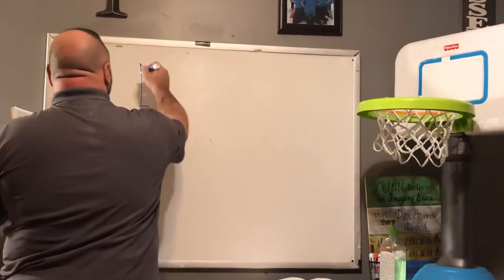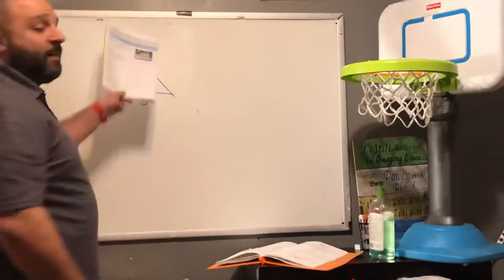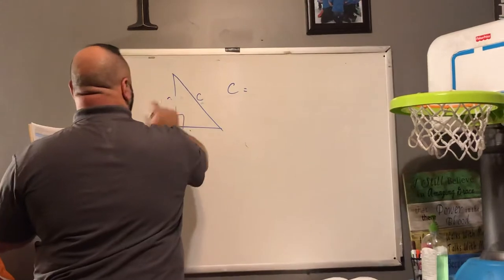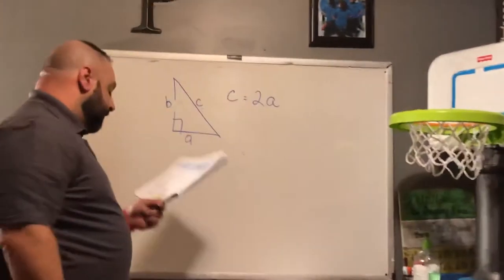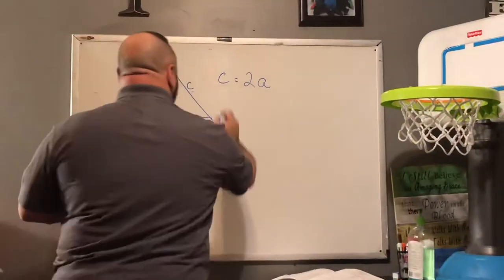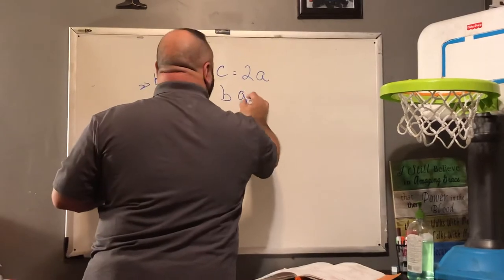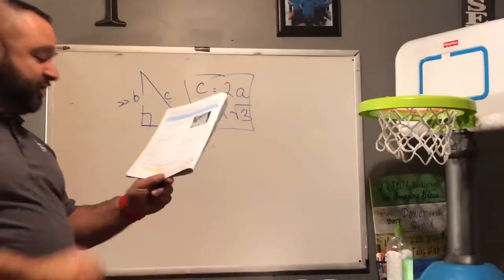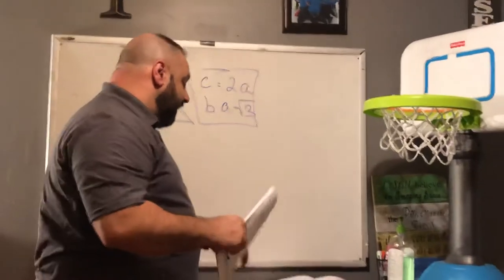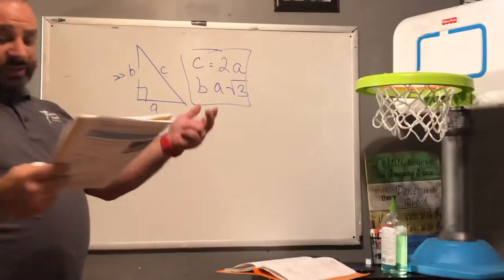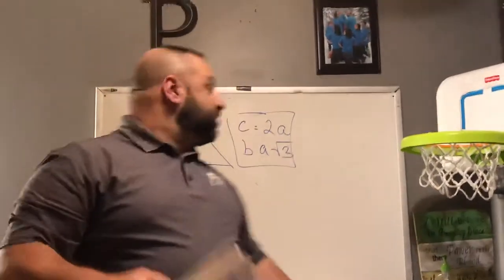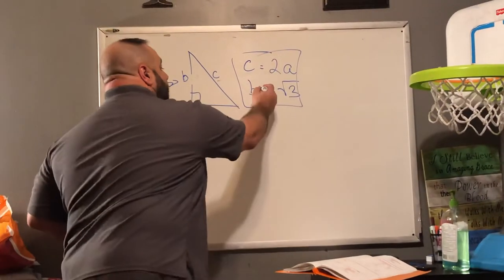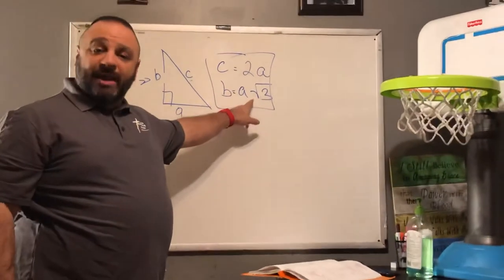So on page 24, for a 30-60-90 triangle: C equals two times the shortest leg, and B equals the shortest leg times the square root of three. Also note that an isosceles right triangle has angles of 45, 45, and 90 degrees — we'll look at that in just a few moments.